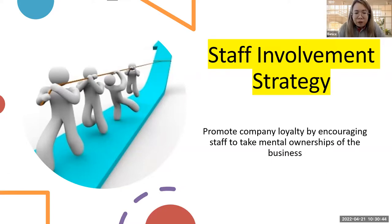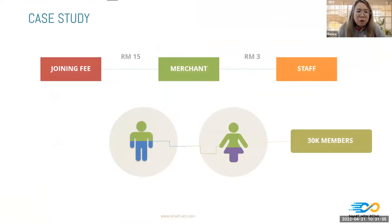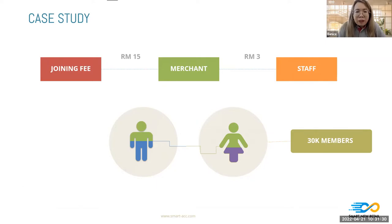Now we want to make the whole program work better by involving our staff. We can apply a joining fee — for example a 15 ringgit member joining fee. From this 15 ringgit, you can design 3 ringgit commission for a staff member who successfully recruits one member. Then you give staff a target — for example, achieve 30,000 ringgit in membership fees in one month. To reach 30K at 3 ringgit per member, they need to recruit 10,000 members.